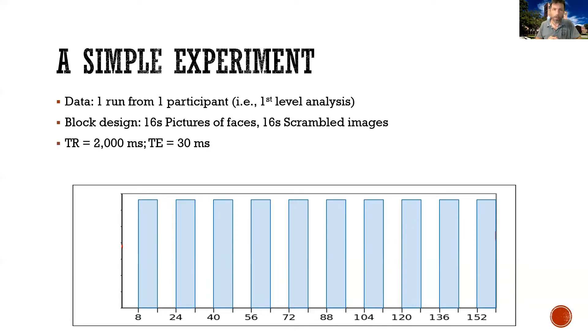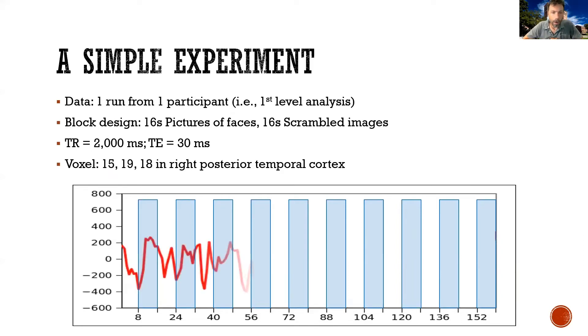We just happened to have a TR of 2 and a TE of 30. And finally, we are going to be concerned with one voxel. So voxel 15, 19, 18, which happens to be in right posterior temporal cortex. And in fact, here is the time series of that voxel.